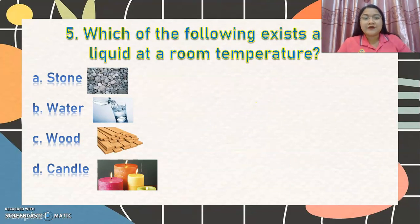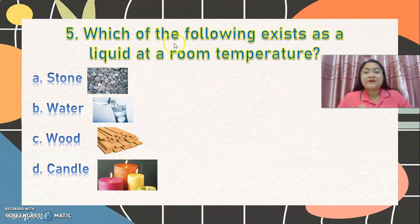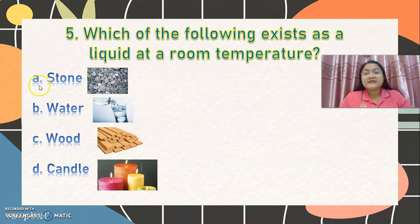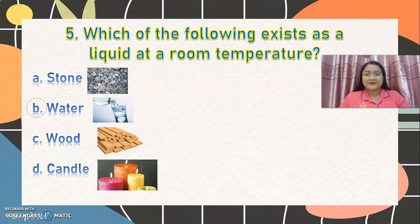Number 5: which of the following exists as a liquid at room temperature? Letter A, stone. Letter B, water. Letter C, wood. Or letter D, candle? The correct answer is letter B, water. Very good.